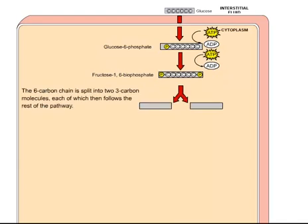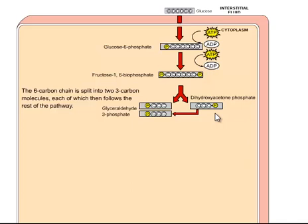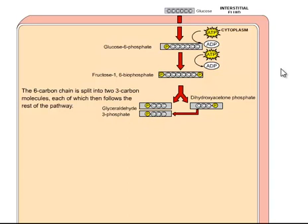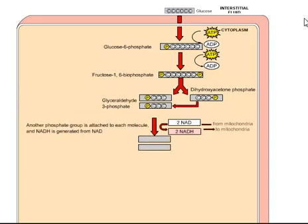Now the six-carbon molecule will split into two three-carbon molecules: a glyceraldehyde-3-phosphate molecule and a dihydroxyacetone phosphate molecule. This dihydroxyacetone phosphate will also convert to glyceraldehyde-3-phosphate. So in a nutshell, the six-carbon molecule splits into two three-carbon molecules, and both will become glyceraldehyde-3-phosphate, giving us two glyceraldehyde-3-phosphate molecules.